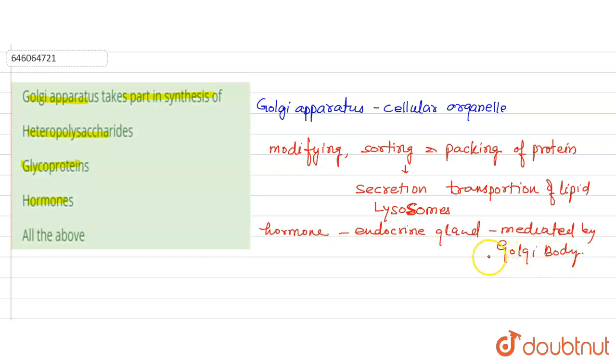Then the complex carbohydrate, that is the mucopolysaccharide like hyaluronic acid and hemicellulose, are also synthesized with the help of the Golgi apparatus.